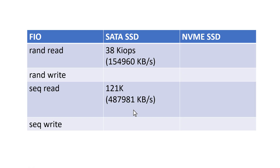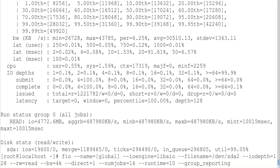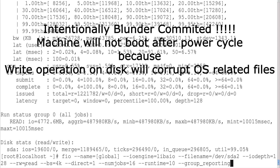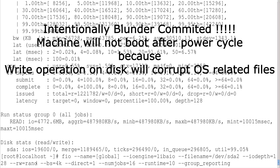Let me put all the values we have calculated into a table. So for SATA SSD: random read is 38k IOPS and sequential read is 121k IOPS. Let us calculate the remaining values and then compare with NVMe SSD. Now let us run random write — I need to change the operation to 'randwrite'.